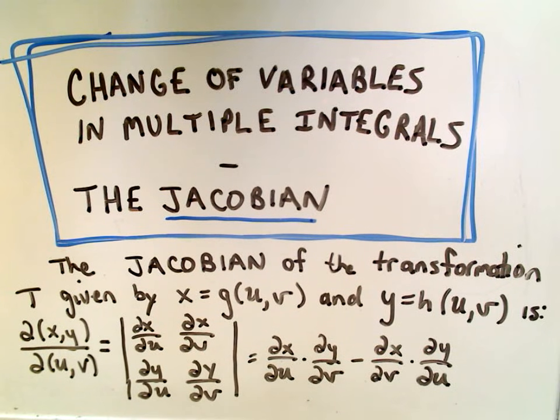In this video I'm going to do a simple example of computing what's called the Jacobian. And where you use this is when you're doing a change of variables in multiple integrals. So maybe you remember u-substitution from when you first start doing integration.